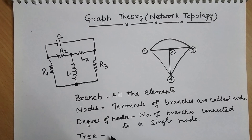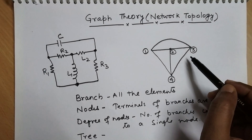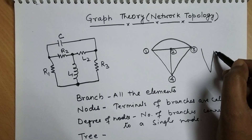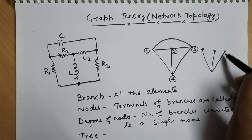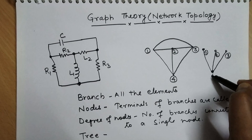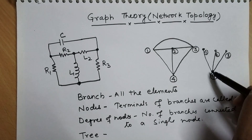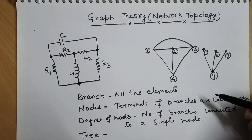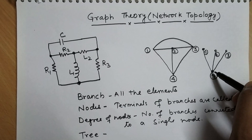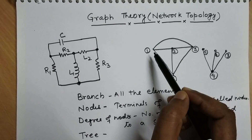The degree of a node is the number of branches connected to a single node. Now, a tree is a combination of branches which includes all the nodes of the given graph. Let us consider a combination — we can see that in this combination all 4 nodes are covered, but there is no loop in the graph. A loop means if a combination of branches makes a closed path. Since none of the branches here makes a closed path, these 3 branches form a tree.